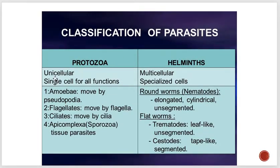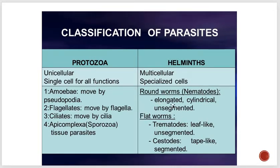The differences between protozoa and helminths: protozoa are unicellular, single cell for all functions — like amoeba moving by pseudopodia, flagellates moving by flagella, ciliates moving by cilia. Helminths are multicellular, with specialized cells for each function. Roundworms, which are nematodes, are elongated and cylindrical, unsegmented. Flatworms, trematodes and cestodes, are either tape-like or leaf-like — one is segmented, one is unsegmented.